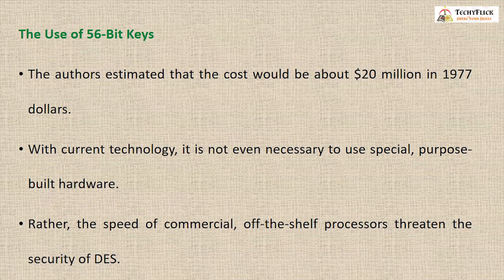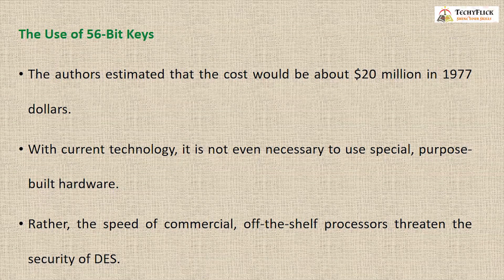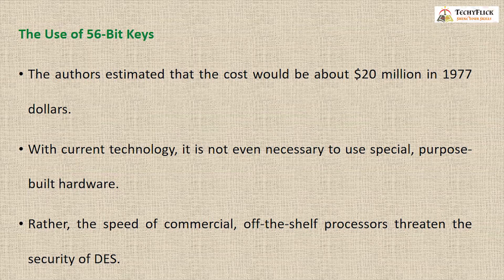Diffie and Hellman estimated that the cost of building such a parallel machine with one million encryption devices would be about 20 million dollars in 1977.